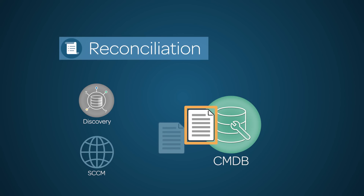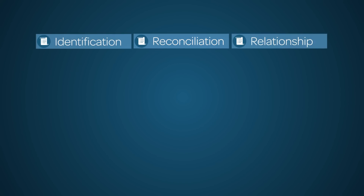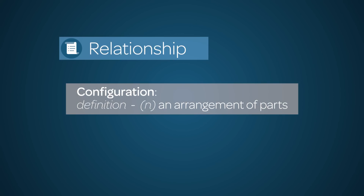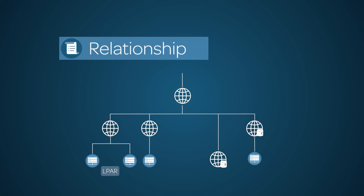This precedence can be established at a high level or all the way down to each individual attribute field. Relationships between CIs are very important to configuration management — one definition of configuration is an arrangement of parts. For IT, it's critical to know how collections of CIs are implemented to deliver a service. When CI classes in the CMDB are created, relationship rules must also be created.